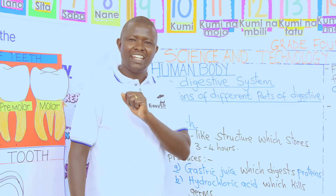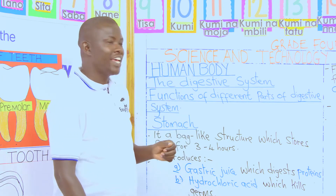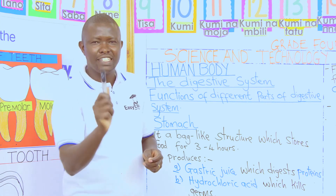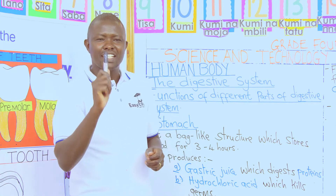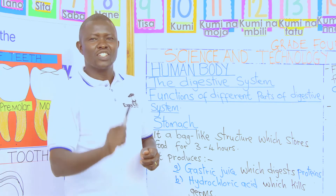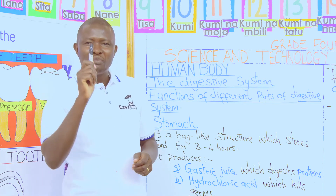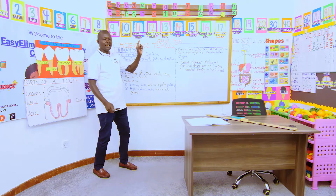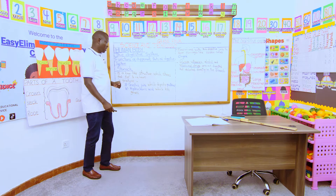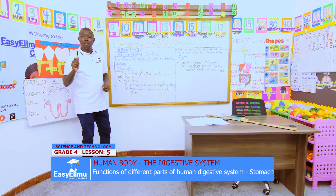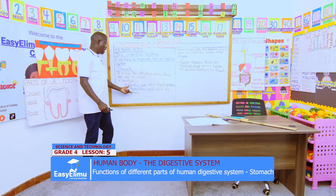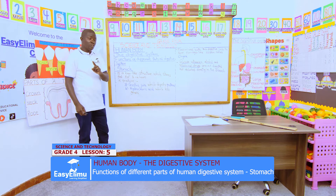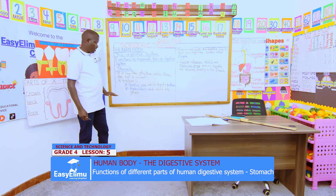Now, in our previous lesson, we said: where is the digestion of starch done? From your tongue — digestion of starch happens in the mouth. But the bodybuilding foods, or the proteins, that digestion happens in the stomach. And the gastric juice is responsible for digesting the proteins.